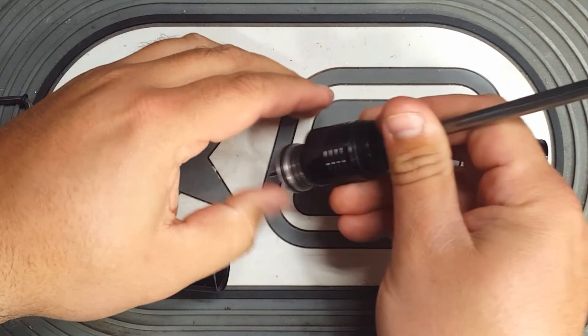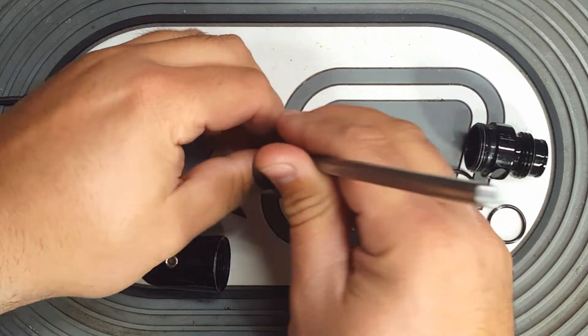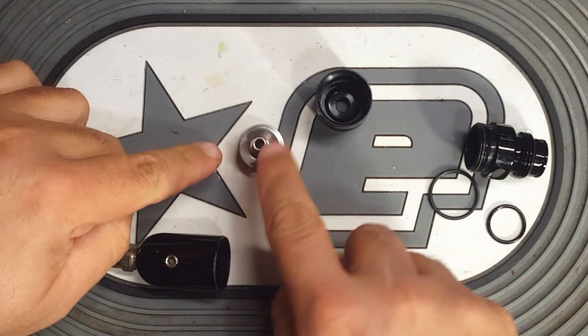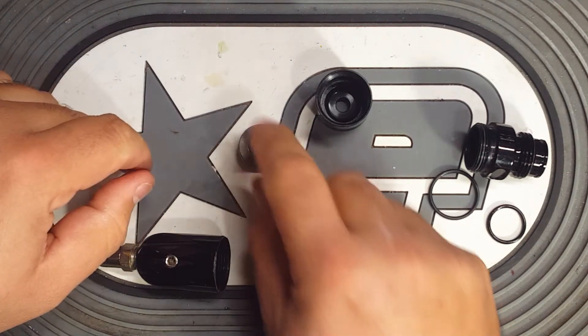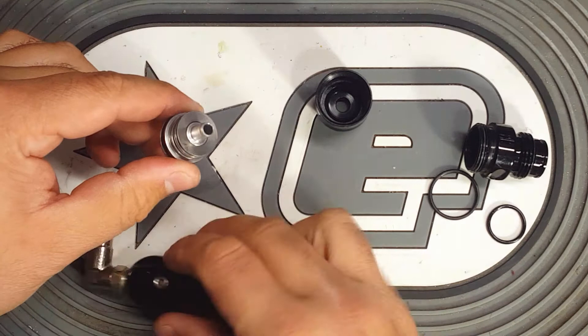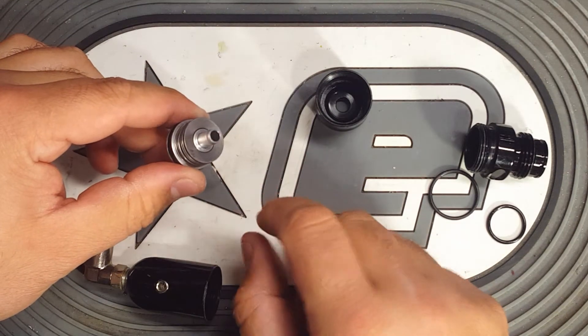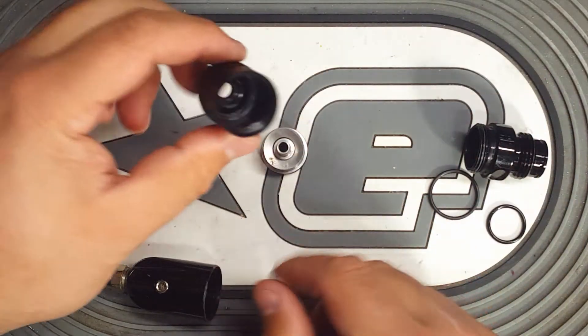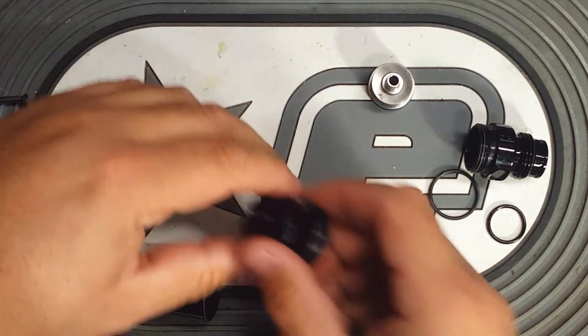use a punch or something like that to push it out from the bottom. Just make sure that you do not damage this lip on the bottom of the piston, because that seals against the reg seat down here. And if this is damaged, you'll have weird over-pressurizing issues.